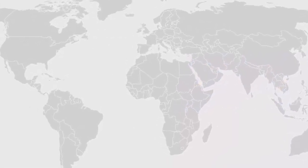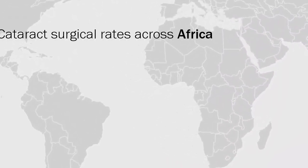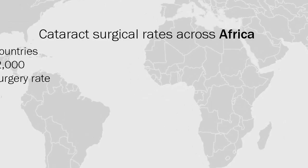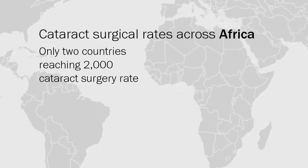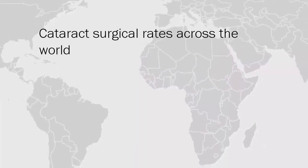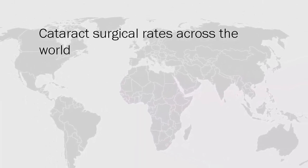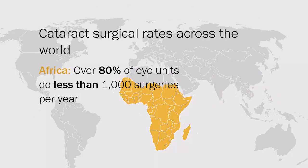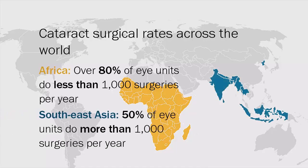When we look at the data from 2011 on cataract surgical rates across Africa, we find that only two countries — The Gambia and Sudan — are reaching this minimum target. Comparing cataract surgical rates across the world, over 80% of eye units in Africa do less than 1,000 surgeries a year. In Southeast Asia by comparison, 50% of units are doing more than 1,000 surgeries a year, and 20% are even doing more than 2,500.